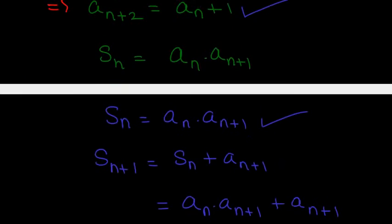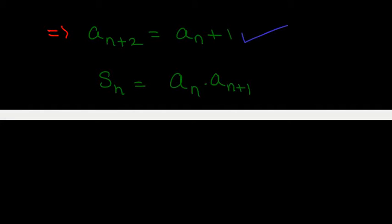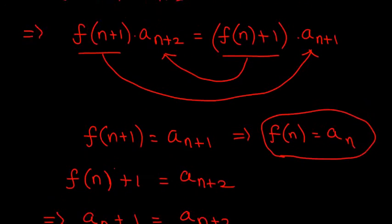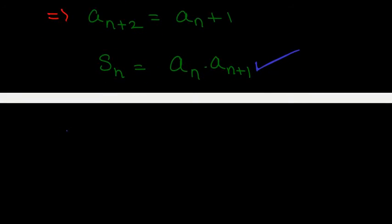Now we have found this nice form, but we have to find the base case that makes this work. We need to find the first few terms that satisfy the condition S_n equals a_n times a_{n+1}. If the base case follows this property and we use the recurrence to find further elements, then the condition that the (n+1)th term divides S_n will be satisfied. Consider a1 equals 52 — that is fixed. In general, let us take some even number 2m, and a2 can be any term dividing 2m.